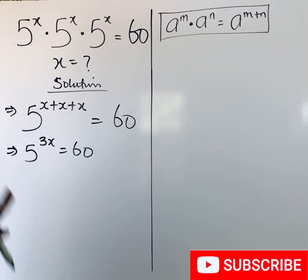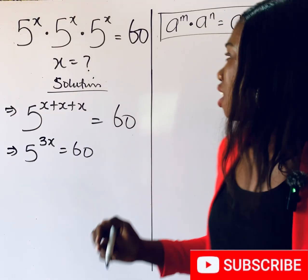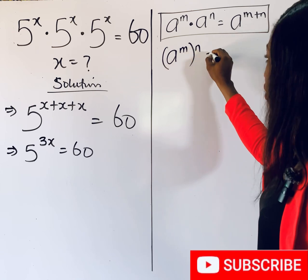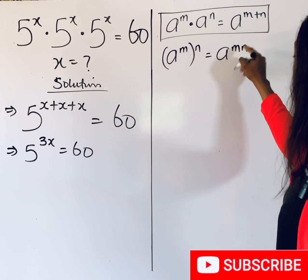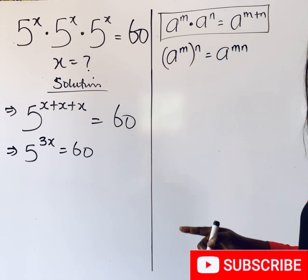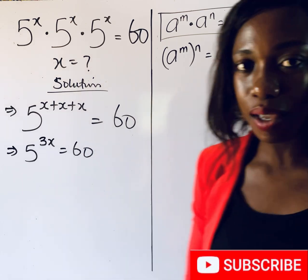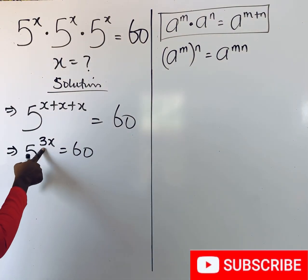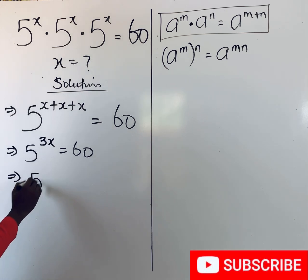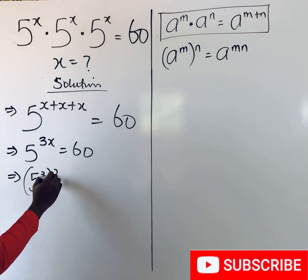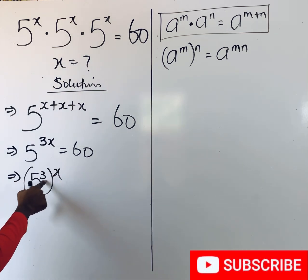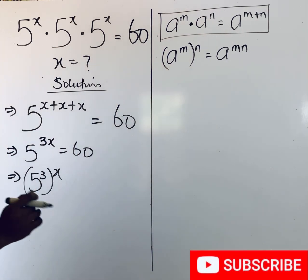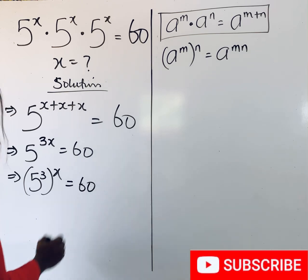Remember this rule: each time you have a^m raised to power n, it is a to the power of m×n — you multiply the powers. Applying this here, we can write 5^(3x) as (5^3) raised to the power of x, so that when you multiply the powers it gives you back the original expression. And this is equal to 60.